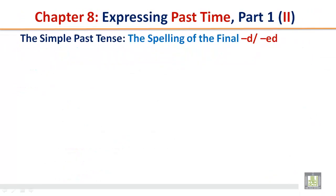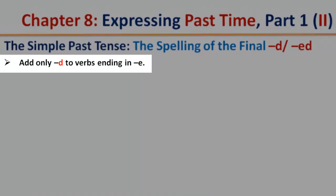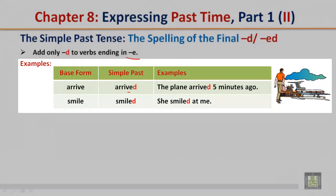The simple past tense — the spelling of the final d or ed. Add d only to verbs ending in e. Base form: 'arrive' → simple past: 'arrived'. Why? Because it ends in e. Example: 'The plane arrived five minutes ago.' Similarly, 'smile' becomes 'smiled' — example: 'She smiled at me.'